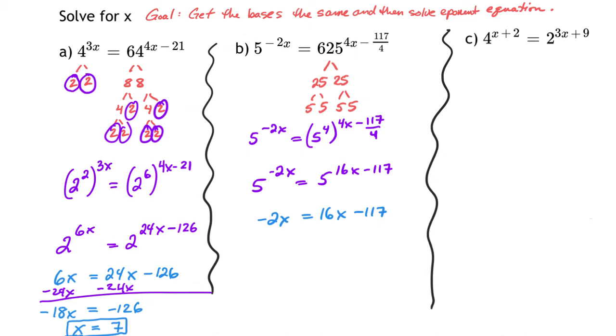To get rid of the 16x, I'll subtract 16x from both sides. Crossing these out gives negative 18x equals negative 117. Dividing by negative 18 gives x equals 6.5.